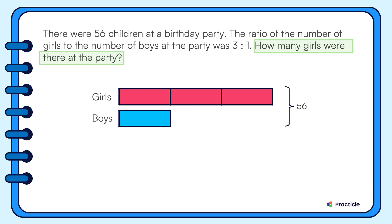Looking at this beautiful model, we can tell that four units represent a total of 56 children. And which part of our model represents the number of girls at the party? If you said these three units, you're right.